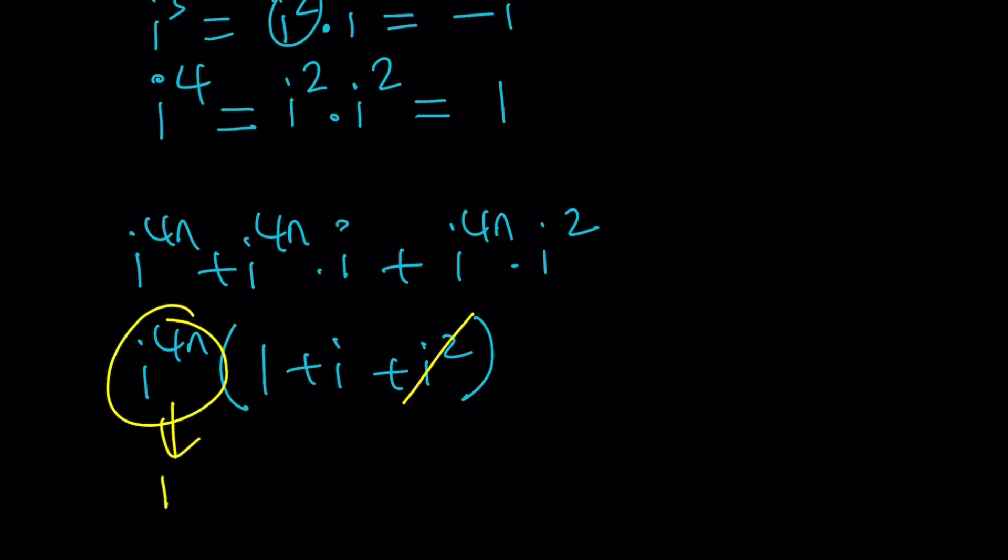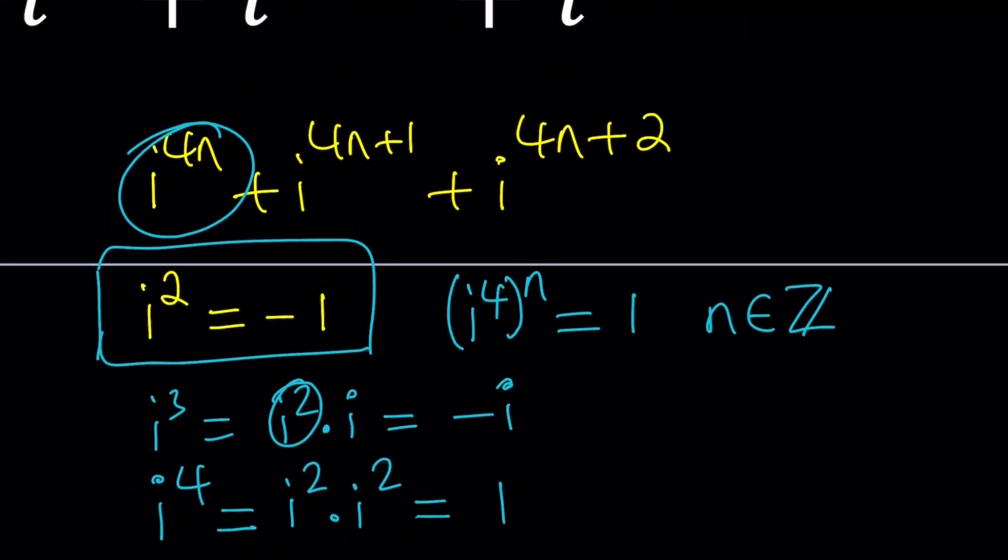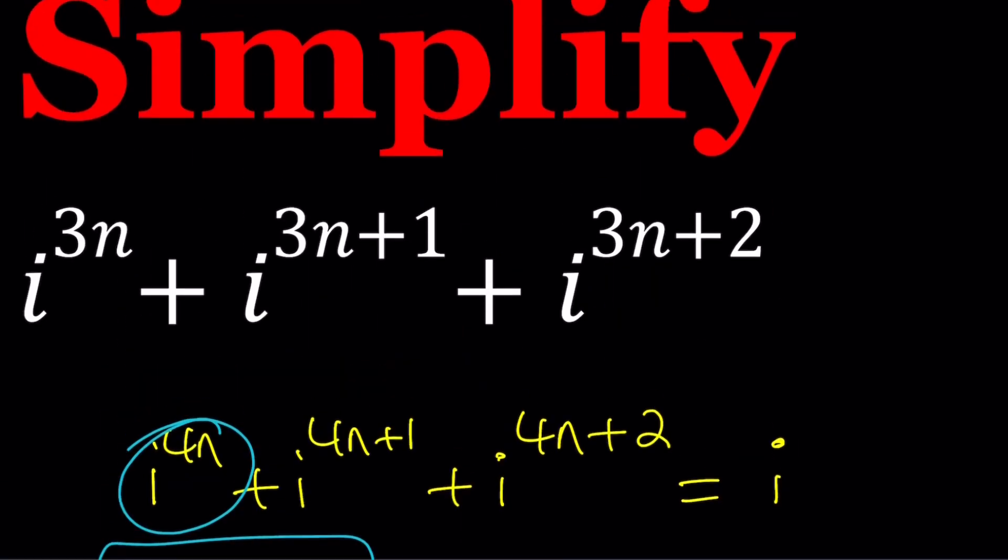and then since i to the 4th is 1, this is going to be a 1, N is an integer. i squared is negative 1, these are going to cancel out, and you're going to end up with i. So this sum would be i, if N is an integer, and you have this type of sum. So do you think this is going to be i as well? No, because 3 and 4 are different numbers, and what's really critical about the 3? It's relatively prime to 4. So it's going to be a different story.